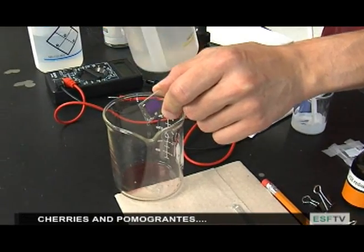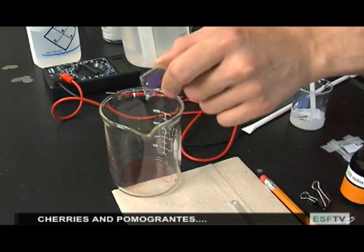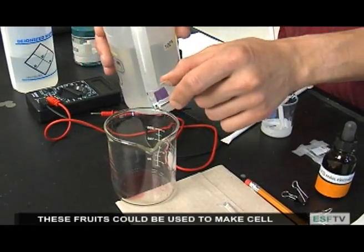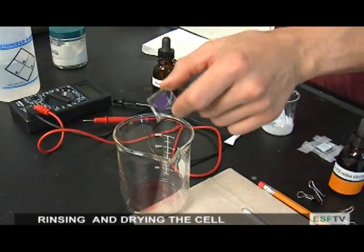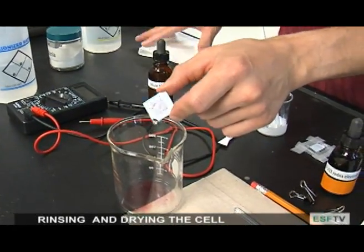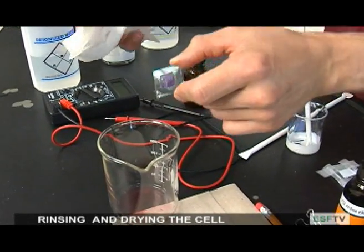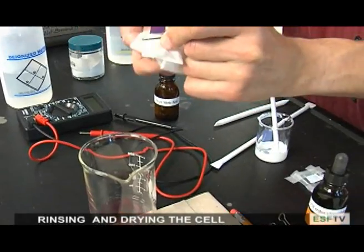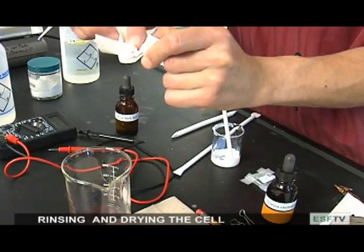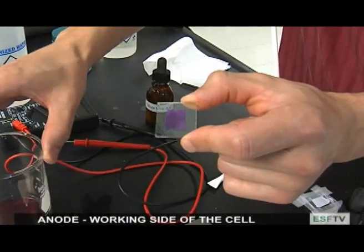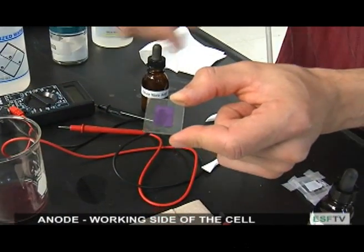That purple color comes from a compound known as an anthocyanin. Those anthocyanins are found in raspberries, blackberries, cherries, pomegranates, and all those fruits can actually make this type of cell. I've done this final rinse with isopropanol. The isopropanol acts as a drying agent to remove any of the water that's present. You can then use a simple kim wipe to blot the surface dry. And we have our working side or anode of the cell ready to go.